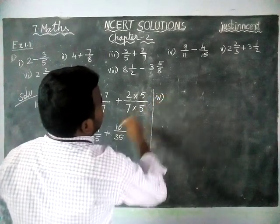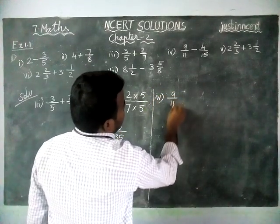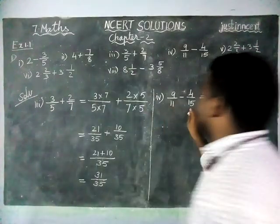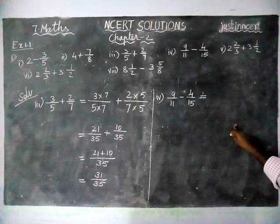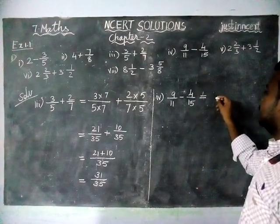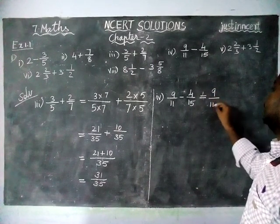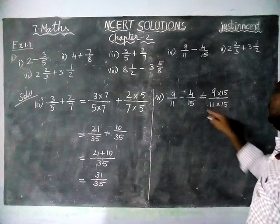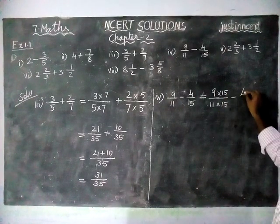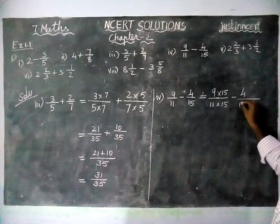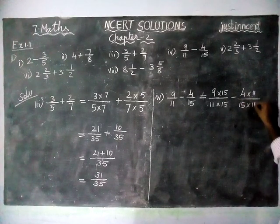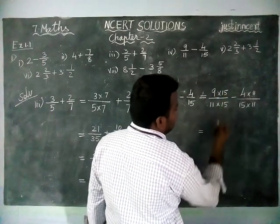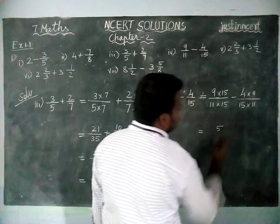Now 4th question: 9 by 11 minus 4 by 15 is equal to. Here denominators are different. So we have to convert into same denominator. 9 by 11 into 15 divided by 15. Then minus 4 divided by 15 into 11 by 11.